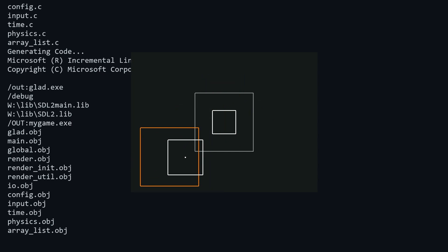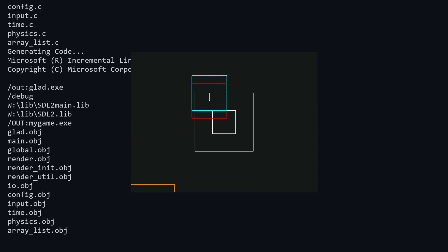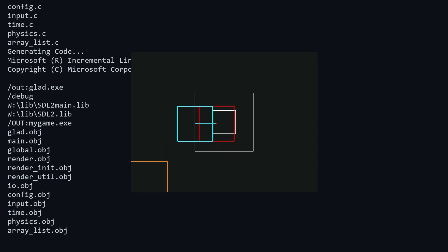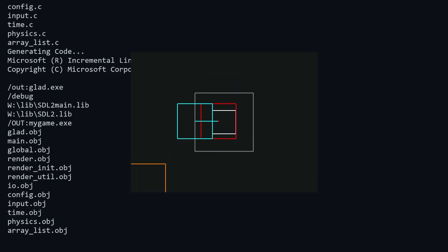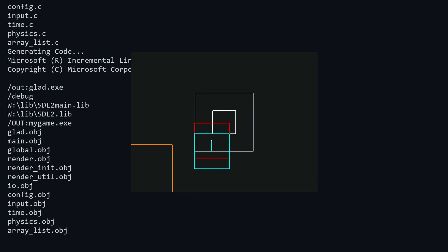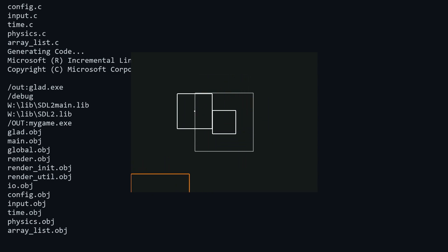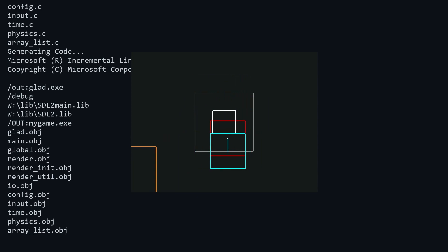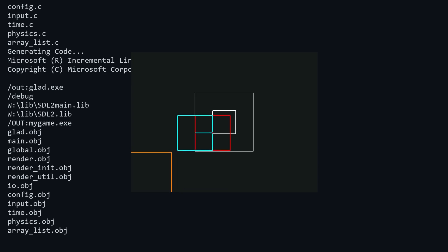To round off this episode, I want to show one common issue with this method: tunneling. Tunneling is what happens when an object is moving so quickly that it passes through another object without the program having the chance to detect that they were intersecting. To demonstrate this issue more clearly, let's head back to main.c and do some tinkering.